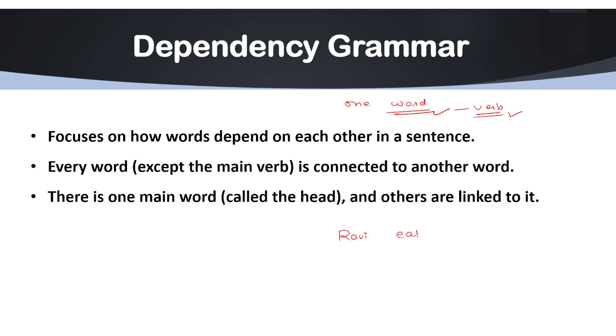Let's take one easy example. Here, 'Ravi eats mangoes.' Eats is the main verb, the head here. Ravi depends on eats—that is the subject. And mangoes are the object that is also dependent on eats. This is how dependency grammar actually works.